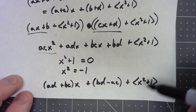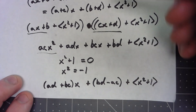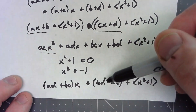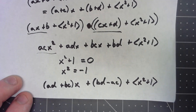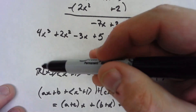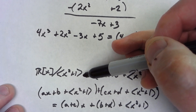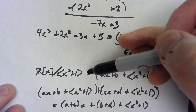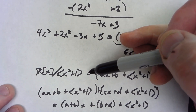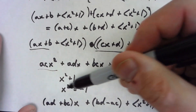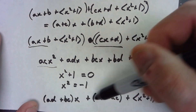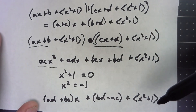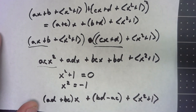I suggest you look at some more examples of this — maybe try it with some specific numbers to see what's going on. But what this effectively shows is that this factor ring is isomorphic to the complex numbers, because of this x squared equals negative 1 relationship. If you look at the way this multiplication operation works, it's exactly the same way that multiplying complex numbers works.